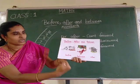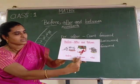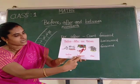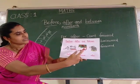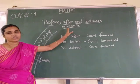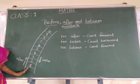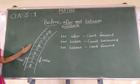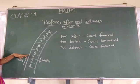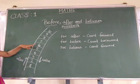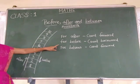Before means 'munnadi' (in front). After means 'pinnadi' (behind). Before, after and between — using the number ladder. To find the after number, you go upward in the number ladder. For example, what is the number that comes after 3? It's 4. What number comes after 6? It's 7.